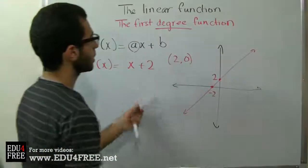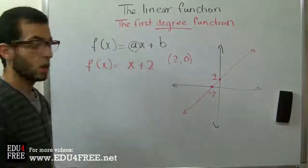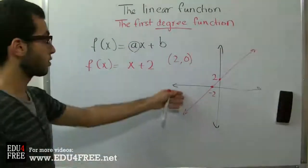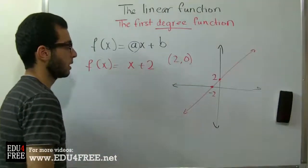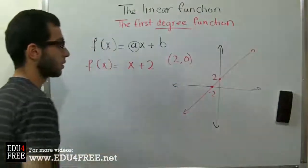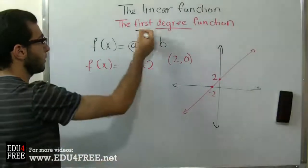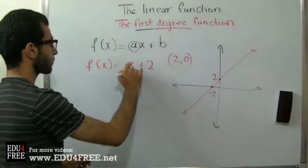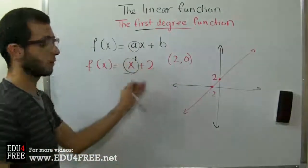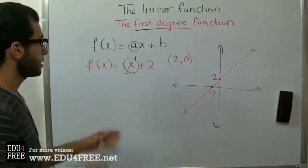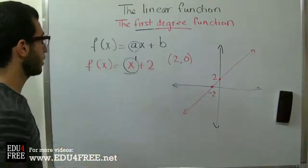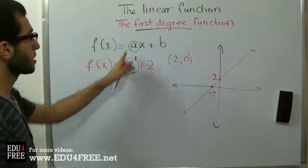We can understand the function's names from its graph on the Cartesian plane. It is called the linear function because its graph is a straight line. It is called the first degree function because the unknown x has a power of 1 — that is the highest degree of x. There are no x², x³, or higher powers; just x raised to the power of 1.